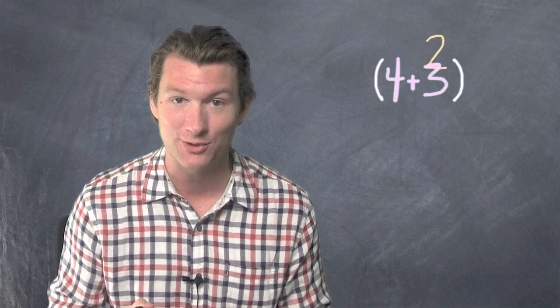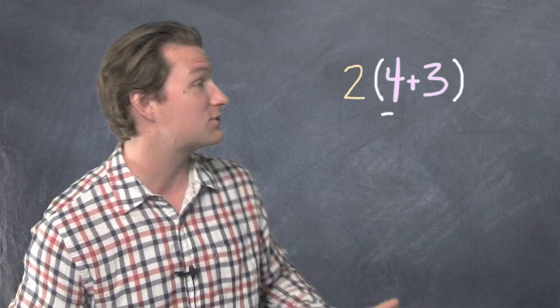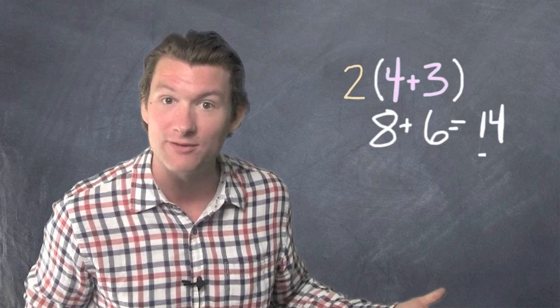So we do 2 times 4, 2 times 3, then add them together. 2 times 4 is 8, 2 times 3 is 6, 8 plus 6 is 14. That's how we use the distributive property.